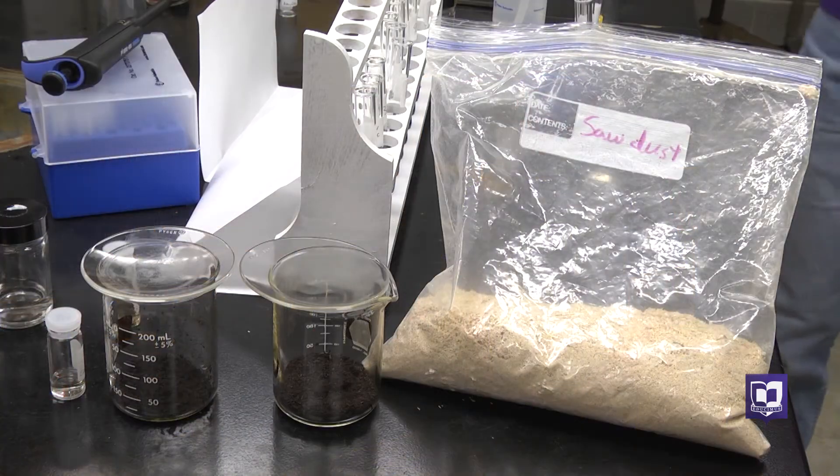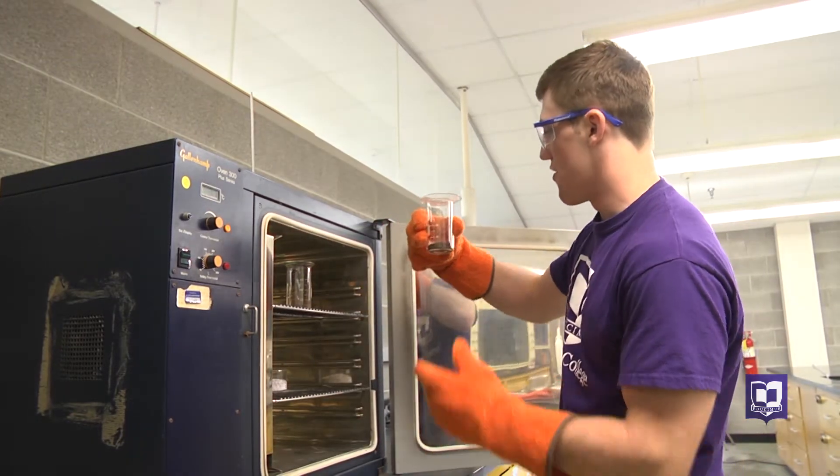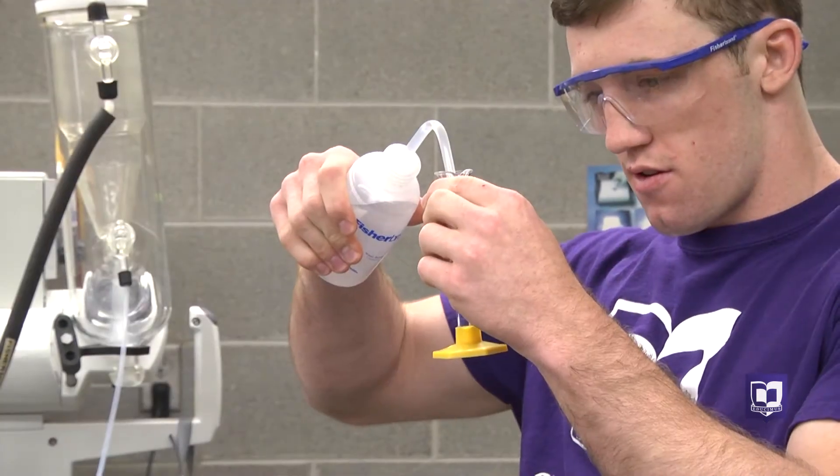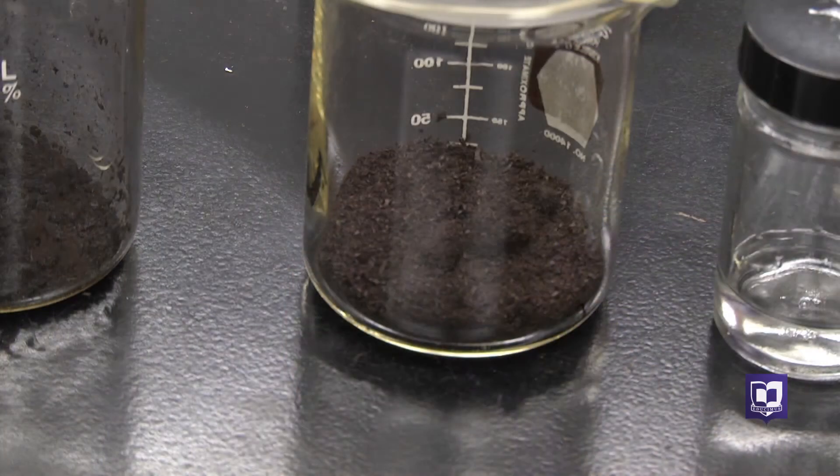Here's how it works. They heat up ordinary sawdust in an oven at 190 degrees to remove the cellulose. Then the remaining lignin and the metal solution get mixed together. I'm working with iron, copper, nickel, and lead so far.